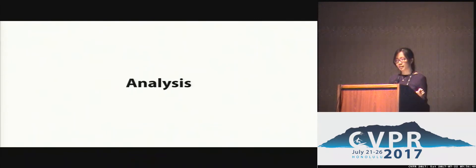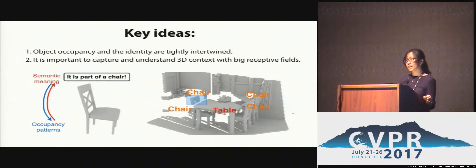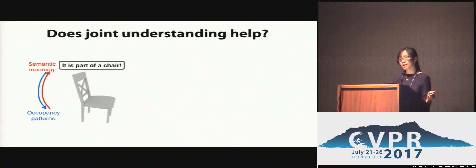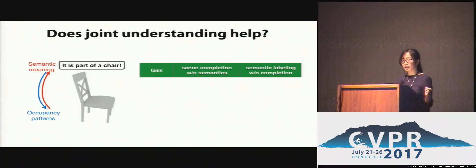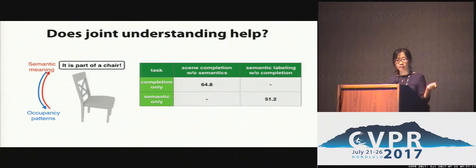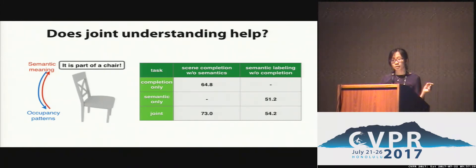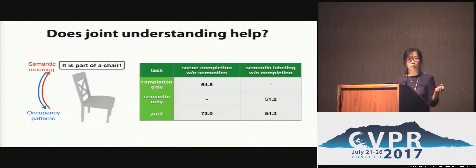Now let's examine how much each key idea contributes. First, does joint understanding of semantics and geometry help? We evaluate two individual tasks — scene completion without semantics and surface labeling without completion — and compare models trained on single tasks versus the joint task. The results demonstrate that even when evaluating on individual tasks, the joint model outperforms the single-task model, validating that it is beneficial to have joint understanding of object semantics and their complete 3D shape.